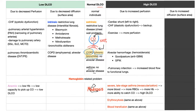How about emphysema? No — emphysema belongs to the low DLCO category because it is an alveolar disease. Causes of low DLCO: either decrease perfusion — decrease the blood — or decrease diffusion — decrease the surface area of the alveoli.